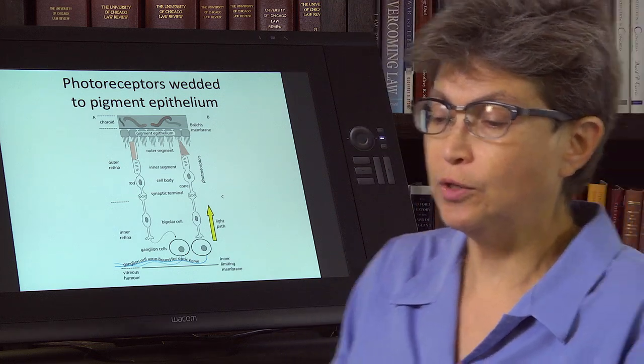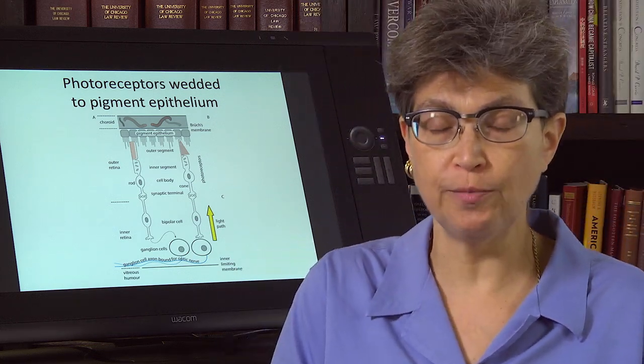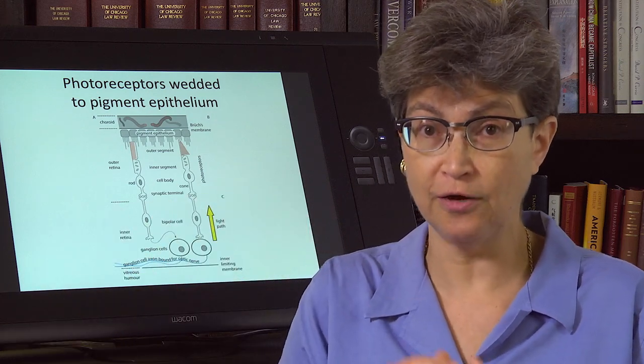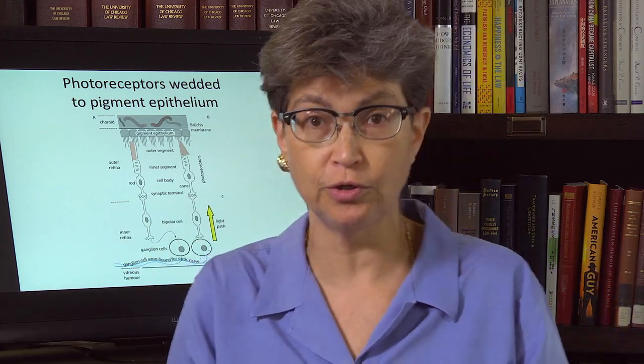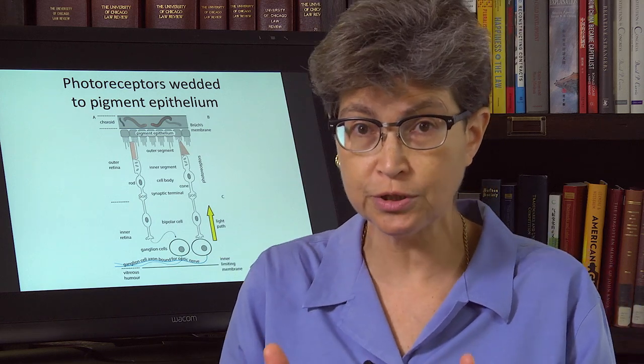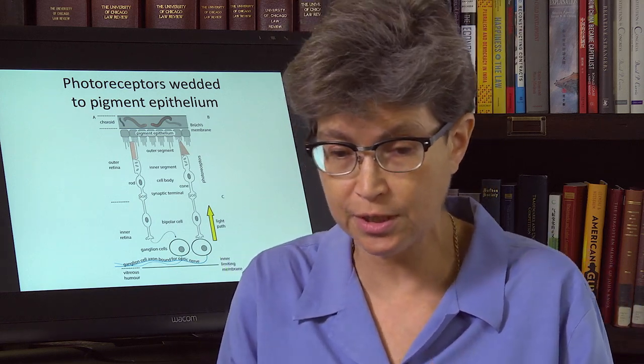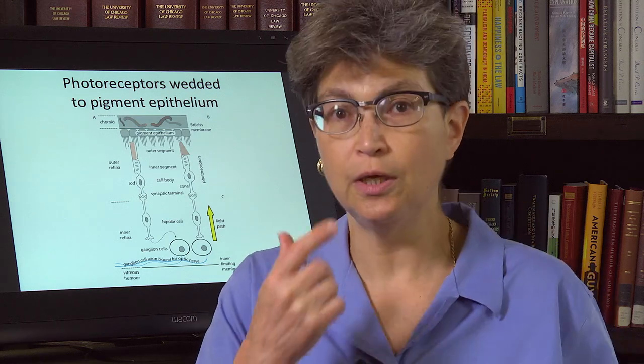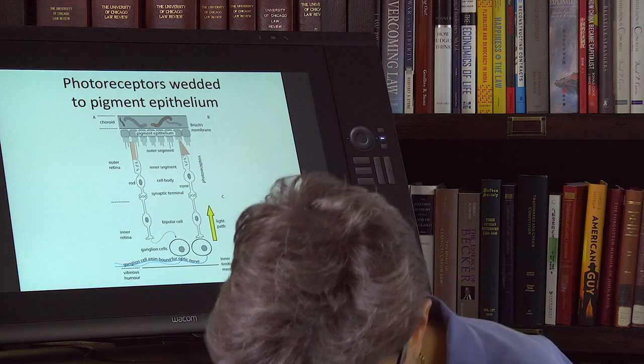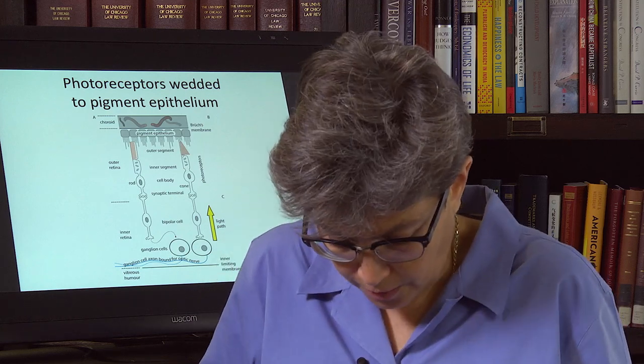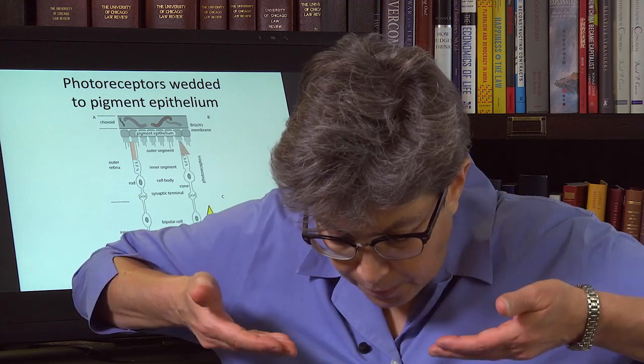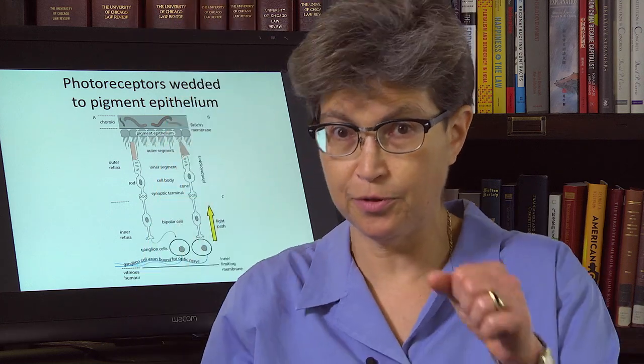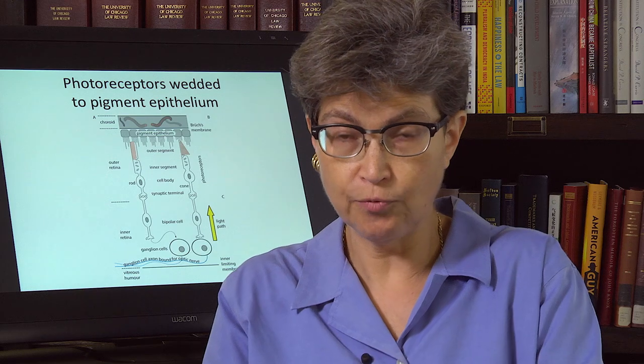So luckily, there are two treatments that can be used to reattach the retina. If it's caught early enough, and it really must be caught very early, this is a medical emergency, an ophthalmic emergency. So the two strategies are—one is to put a bubble into the vitreous humor and to have the person put their face down so that the bubble pushes up on the retina and pushes it back towards the pigment epithelium, and you hope that they reattach.